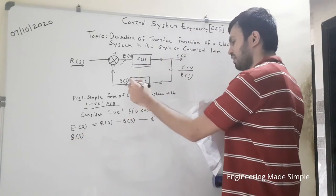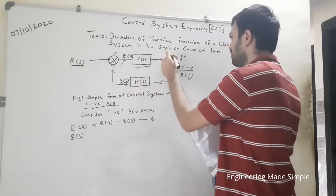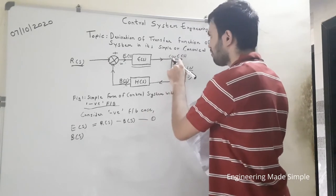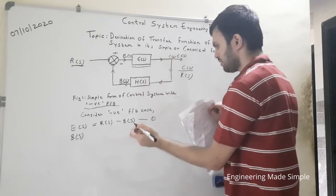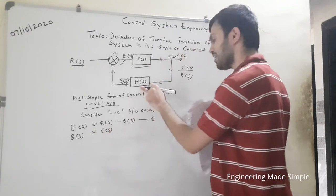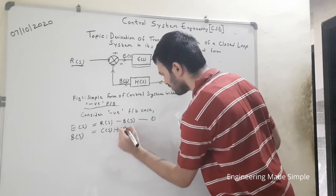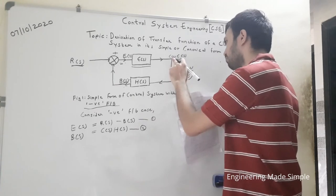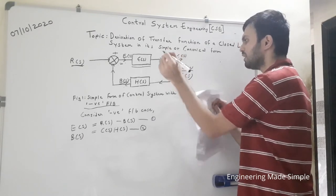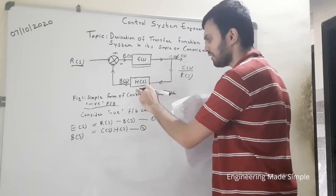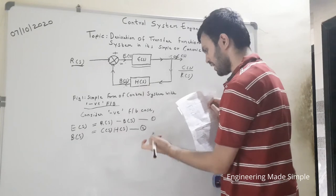Next, B(s) is the Laplace transform of the feedback signal. At the takeoff point, C(s) is present, and part of the output is fed back. So B(s) = C(s) · H(s), where H(s) is the transfer function in the feedback path. Label this as equation number two.